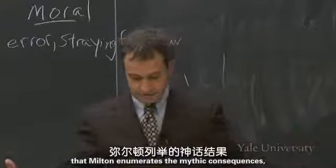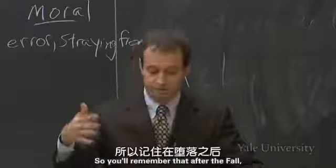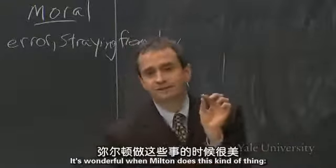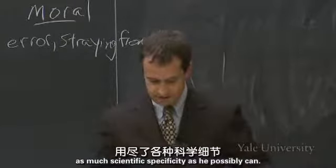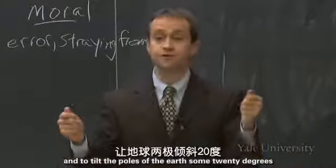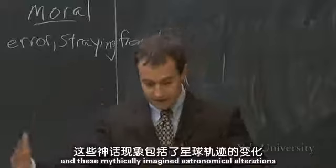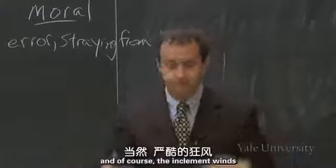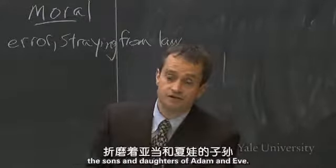With great literary and imaginative gusto, Milton enumerates the mythic consequences at some length in Book 10. After the fall, Adam and Eve are punished with bad weather. Milton tries to represent this punishment with as much scientific specificity as he possibly can. The angels are instructed by God to shift the sun around and to tilt the poles of the earth some 20 degrees from the sun's axis. These mythically imagined astronomical alterations will bring with them the four seasons — new to earth — and the inclement winds, the biting cold, that will plague forever the sons and daughters of Adam and Eve.